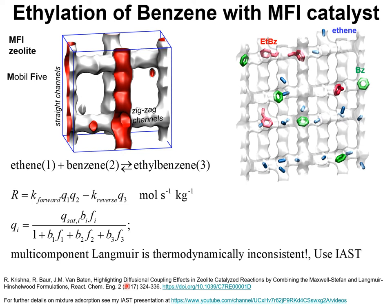The key message of this presentation is that the Langmuir-Hinshelwood kinetics commonly used in practice relies on expressions for component loadings that are not precisely correct thermodynamically. In practice, it is preferable to set up expressions in which the reaction rate is written in the standard form, but the component loadings Q1, Q2, and Q3 are determined using the IAST. See also my presentation on IAST on my YouTube channel.